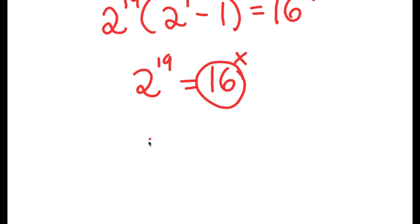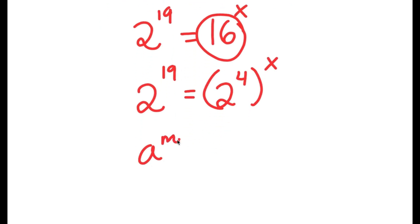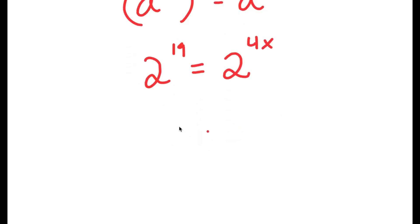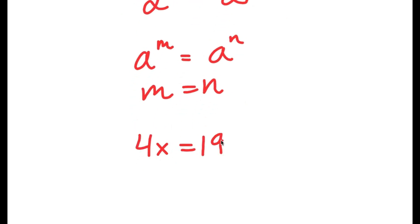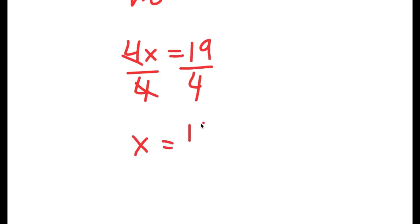Now 16 is the same thing as 2 to the power of 4. So I have 2 to the power of 19 is equal to 2 to the power of 4 to the power of x. If I have something in the form a to the power of m to the power of n, this equals a to the power of m times n. So 2 to the power of 4 to the power of x equals 2 to the power of 4x. Since the bases are equal, 19 equals 4x. Dividing both sides by 4, x is equal to 19 over 4.